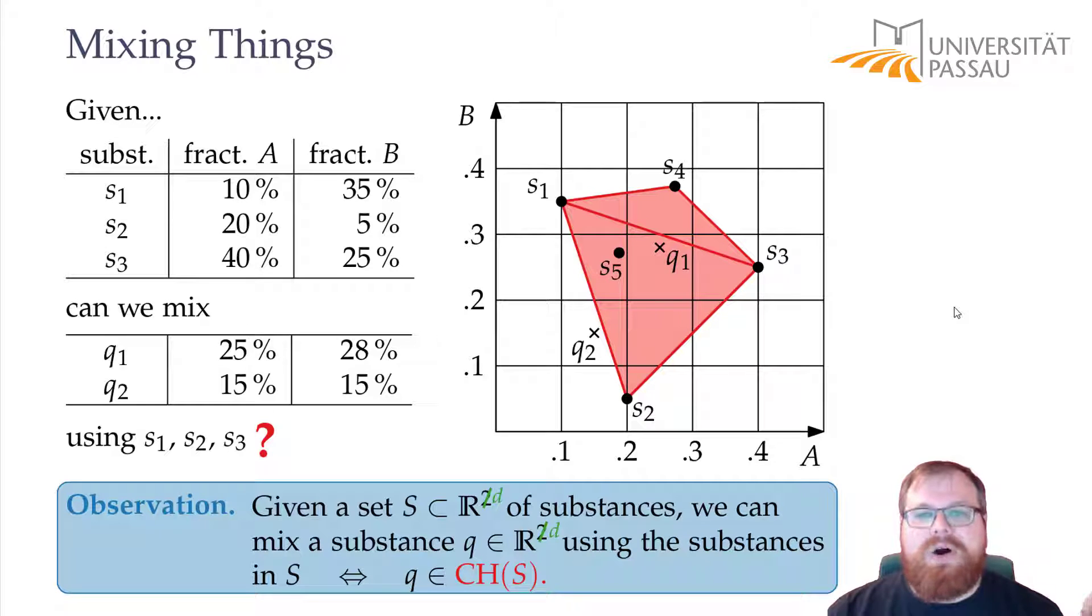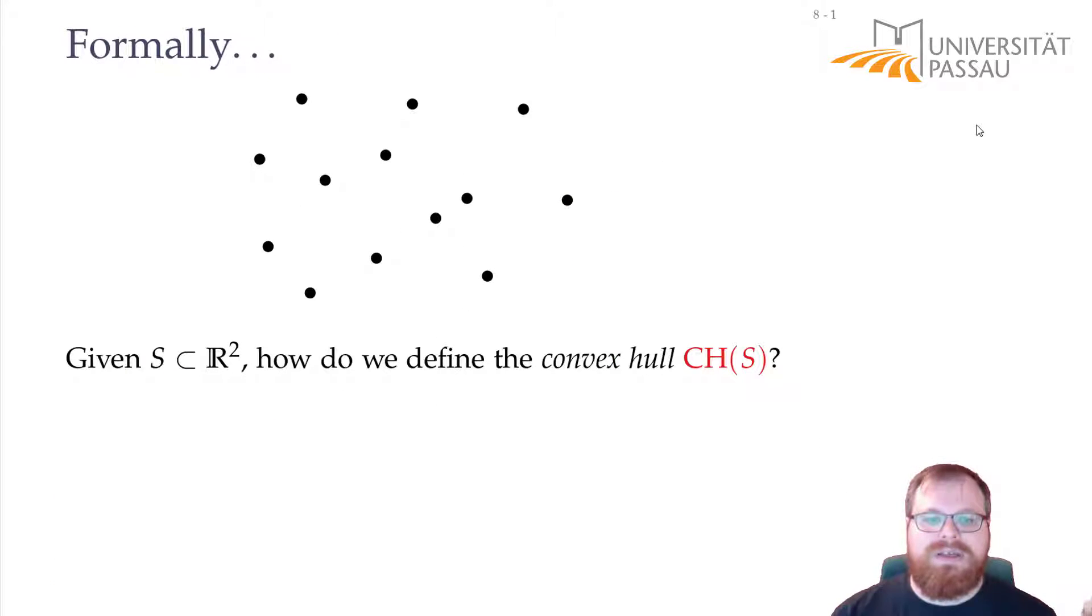Using the convex hull, we can solve these types of problems. There are now two things we have to do. First, we have to formally define what a convex hull is, and then we want to find out how we can compute it. So, assume you are given a point set, let's say we are still in two dimensions, how would you define the convex hull of this point set?